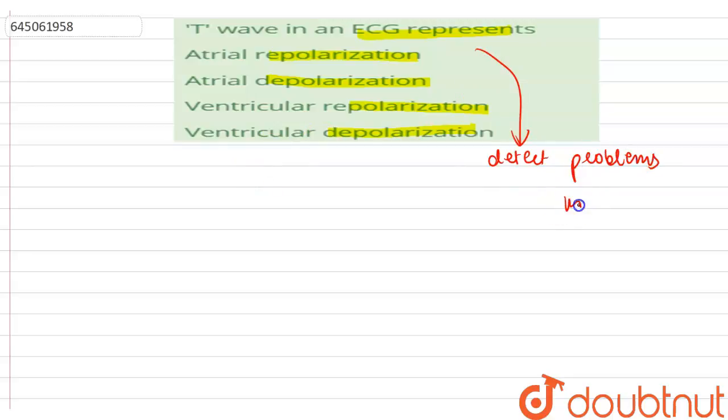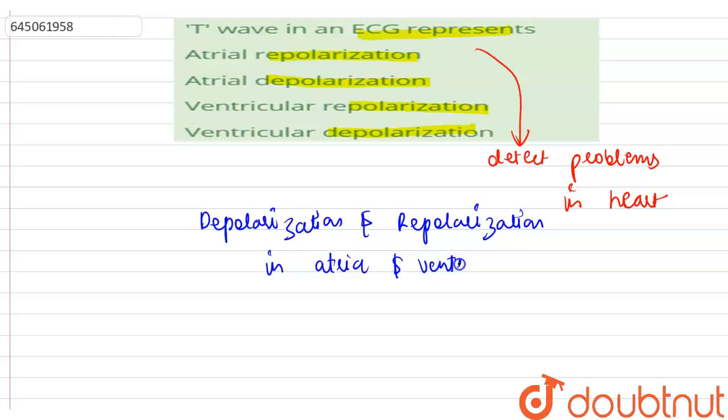To detect various kinds of heart diseases, the depolarization and repolarization in atria and ventricles, which are chambers present in the heart, are detected. They are represented by three types of waves in ECG.